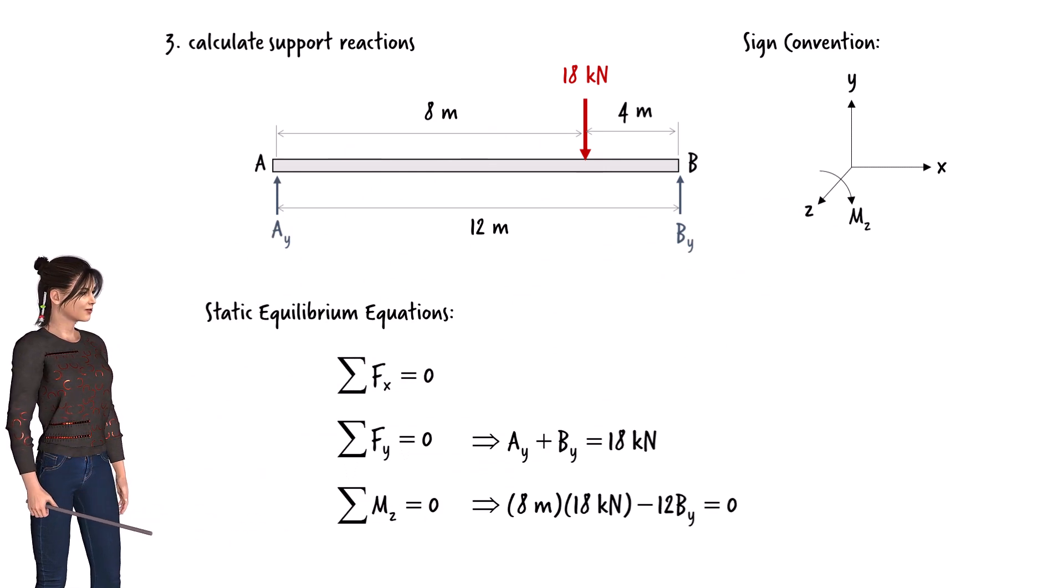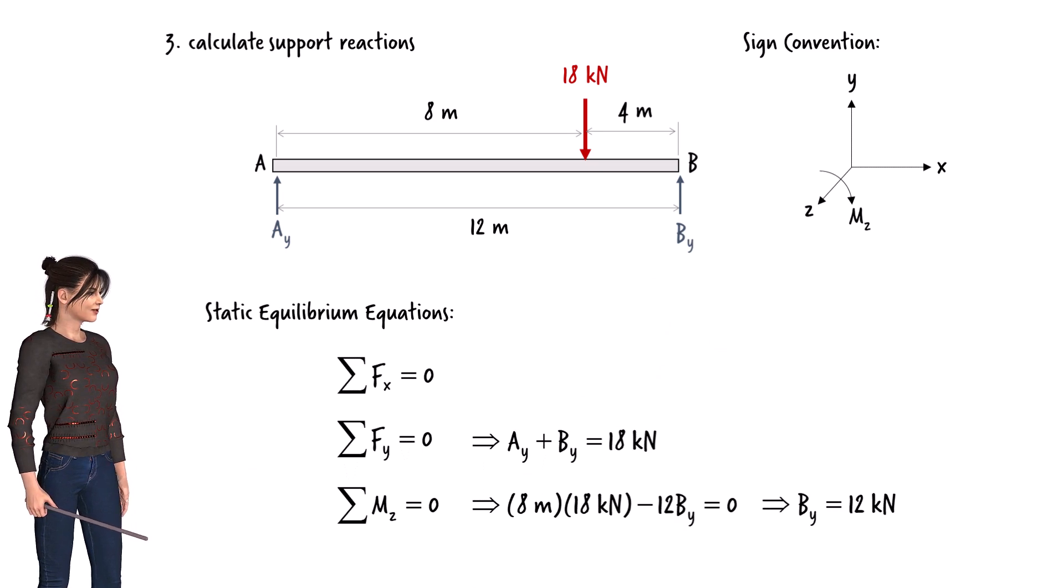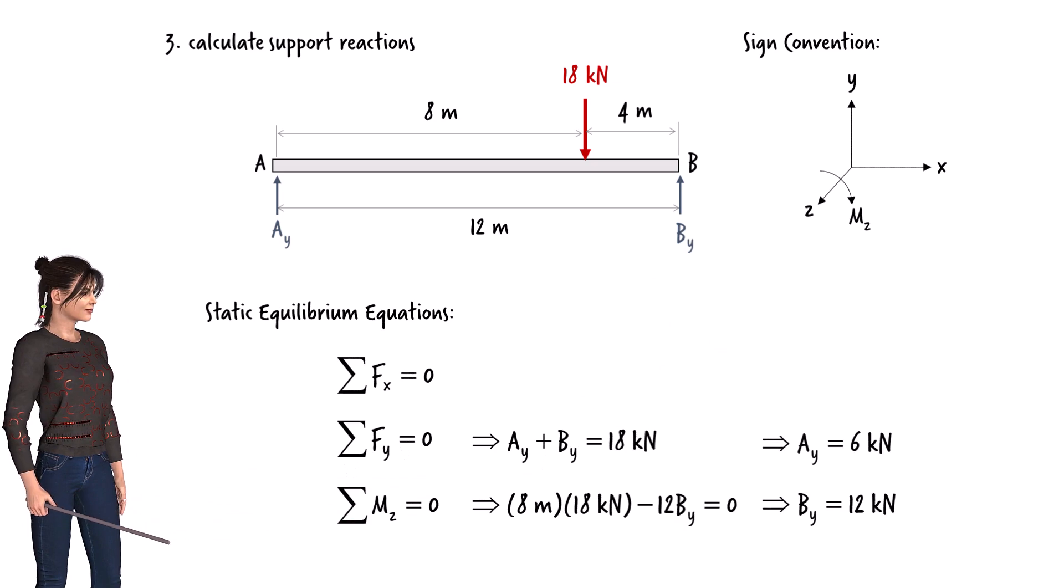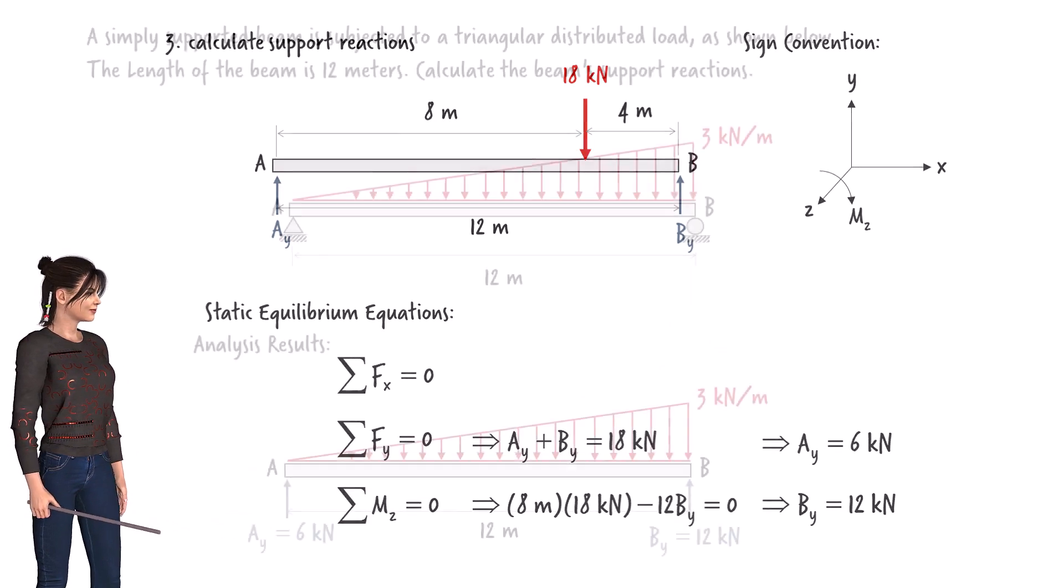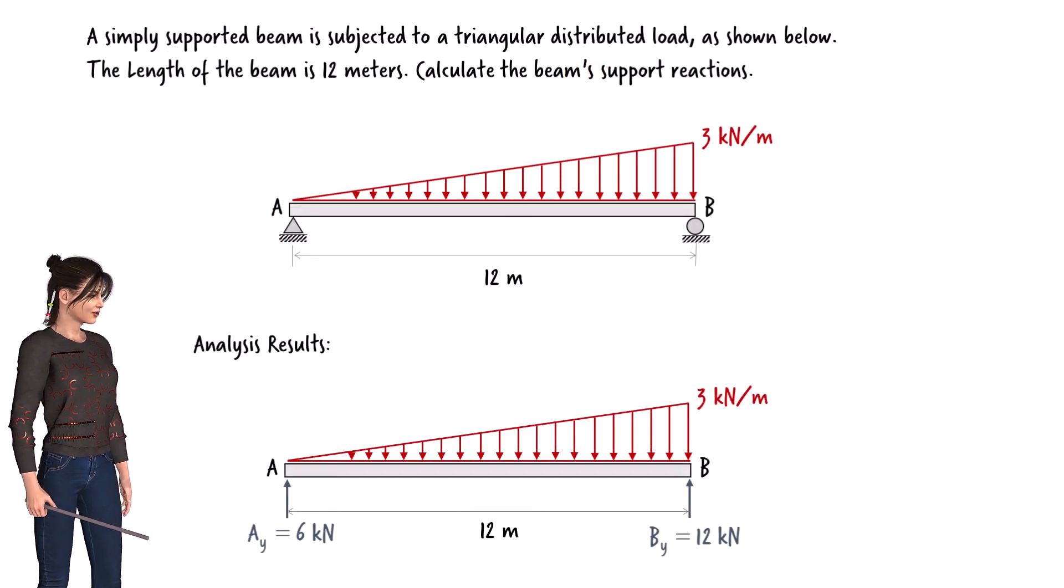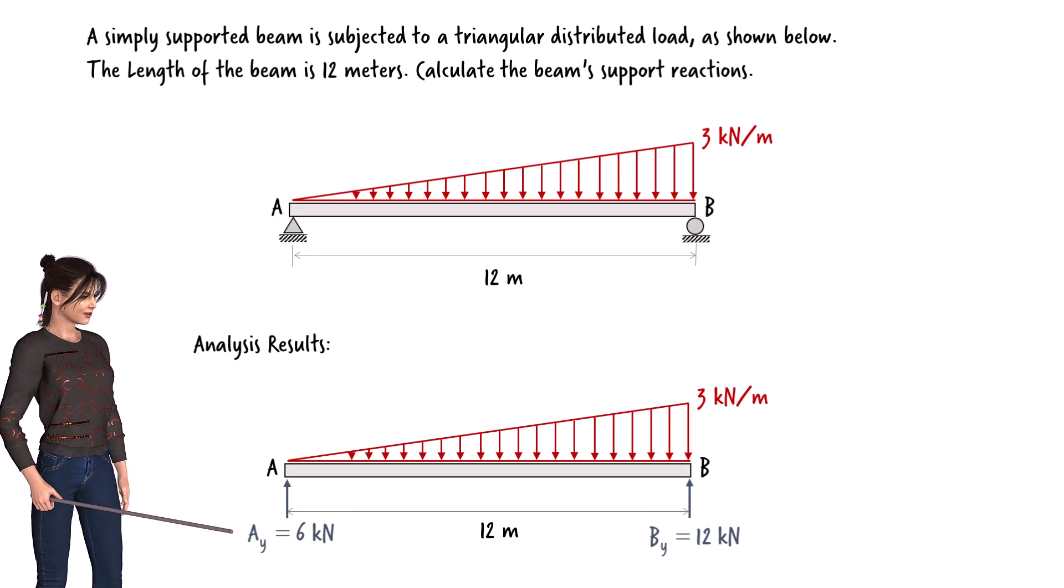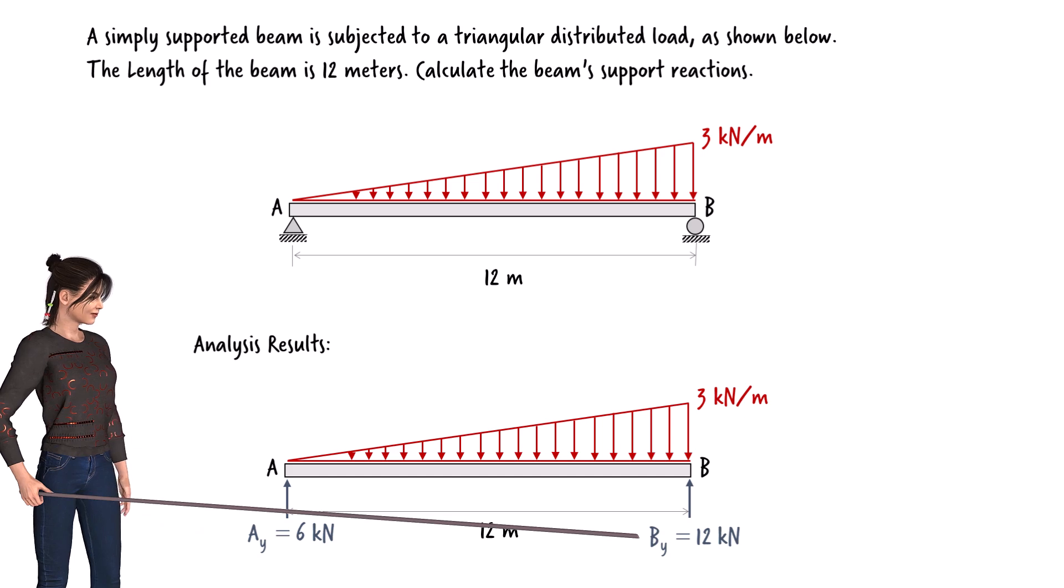Solving the moment equation for By we get... Now we can use the second equilibrium equation to find Ay. So the beam support reactions are Ay equals 6 kN and By equals 12 kN.